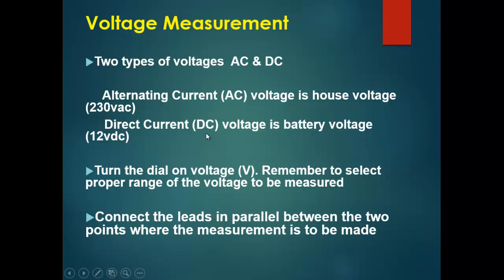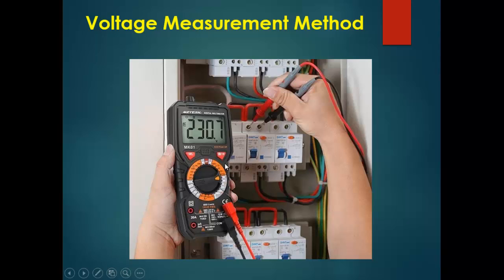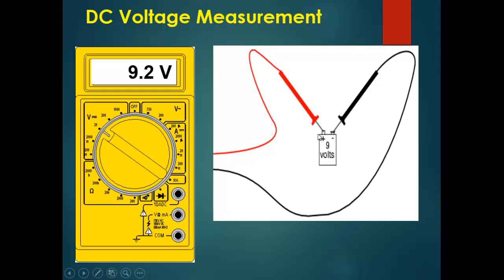First, properly select between the two voltages depending on which you want to measure, then turn the dial to voltage and select the proper range — remember to select the next higher value. Connect the black and red leads in parallel between the two points where measurement is required. As you can see here, the person is measuring the voltage between two terminals and the meter is showing 230 volt AC.